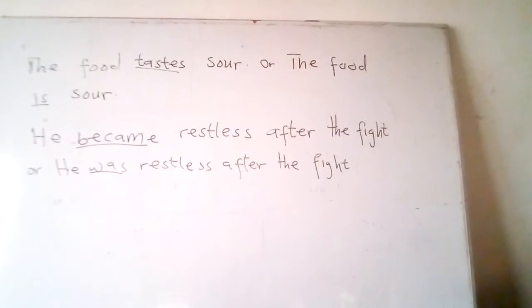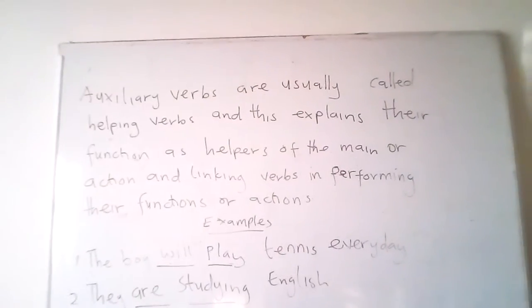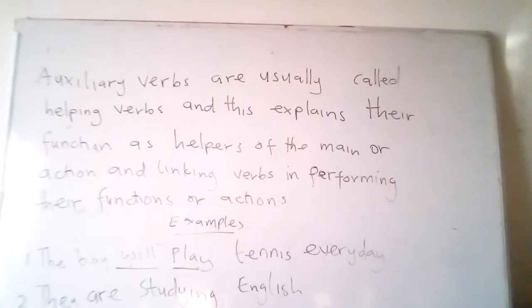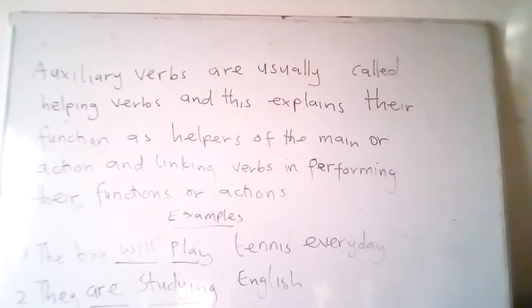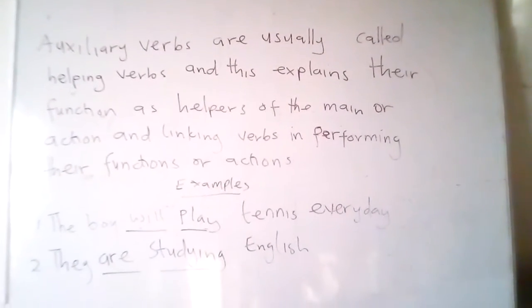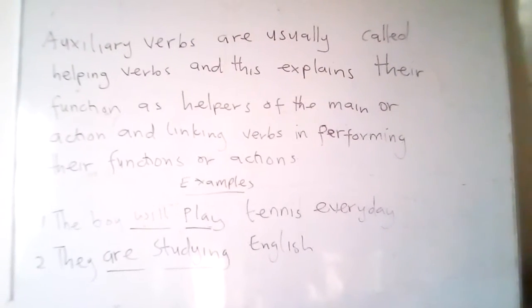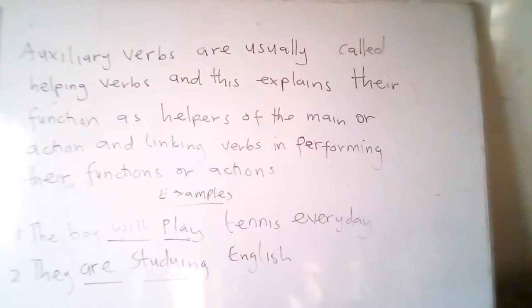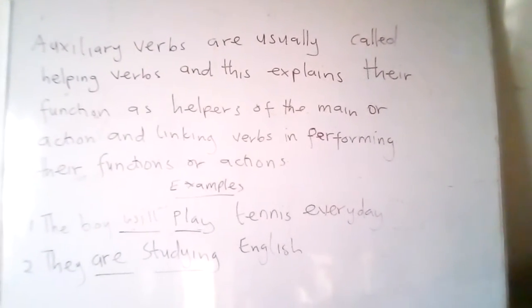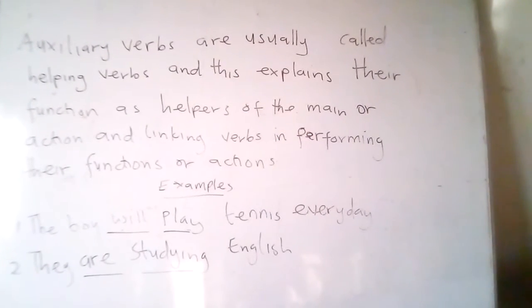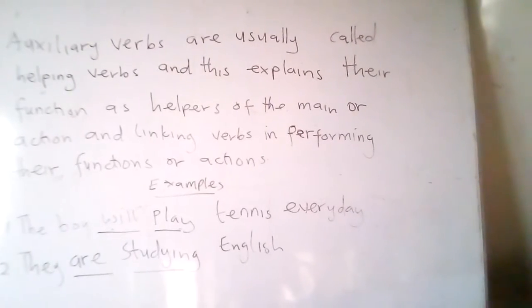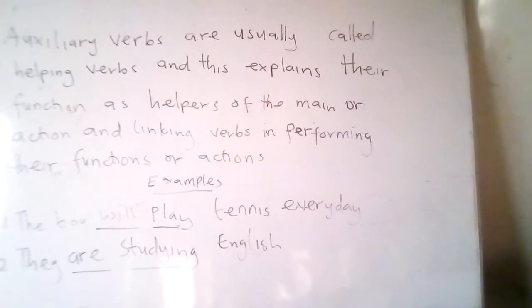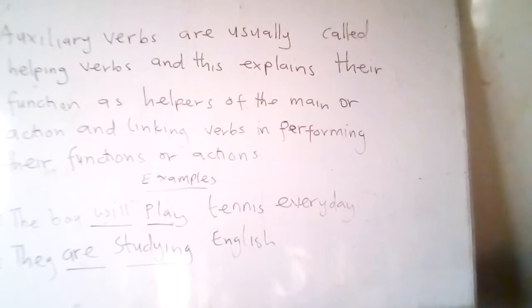Now let's go to auxiliary verbs, which can also be called modal verbs or helping verbs. Auxiliary verbs are usually called helping verbs, and this explains their function as helpers of the main or action and linking verbs. In short, auxiliary verbs or modal auxiliaries are used to help main verbs perform their actions in sentences. Examples of modal verbs are: shall, should, will, would, can, could, may, might, must, ought to, used to, need, do, does, did, have, has, had. Note that the verbs 'to be' and 'to have' are also auxiliary verbs.